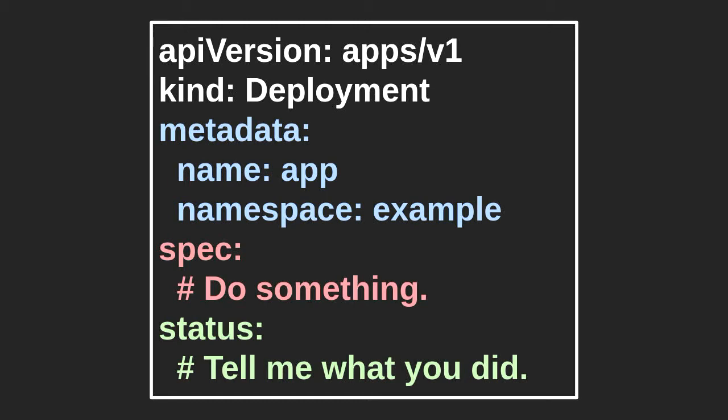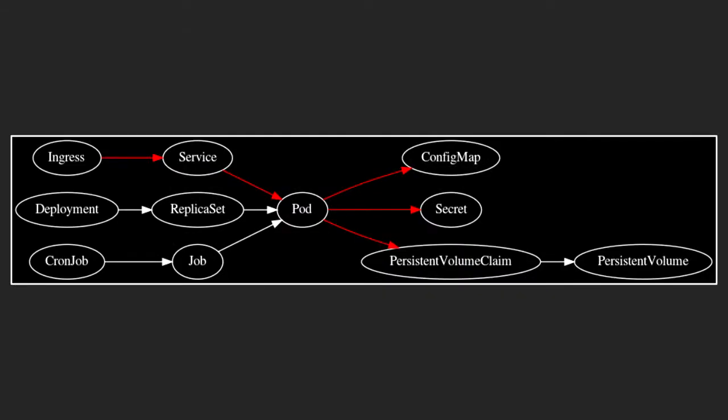We came here to talk about Drupal. This is the high-level kickoff — the anatomy of a Drupal application deployed with Kubernetes APIs, with the hot path being highlighted in red. There are quite a few APIs involved, so buckle up.